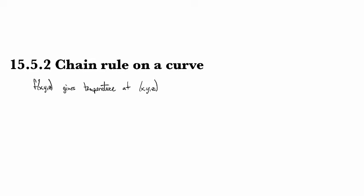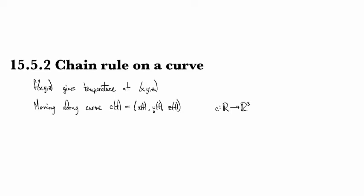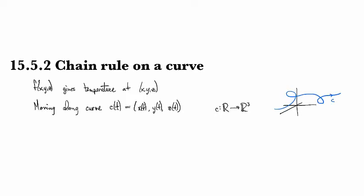Suppose that you are moving along a curve, parametrized by T, with an X coordinate that depends on T, a Y coordinate that depends on T, and a Z coordinate that depends on T. C is a function from the real line into R³, and we can depict it as some curve.